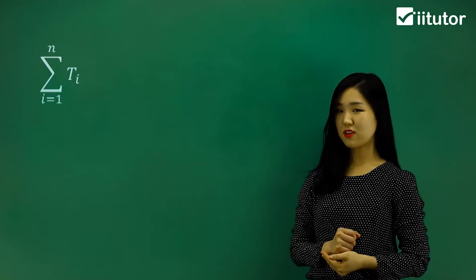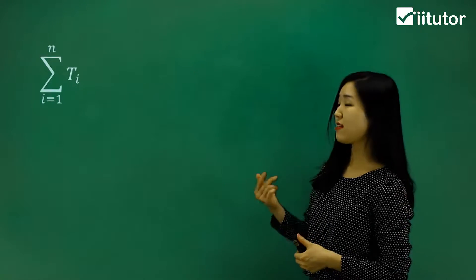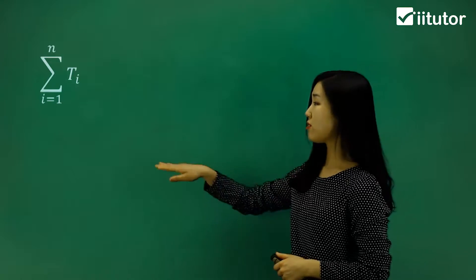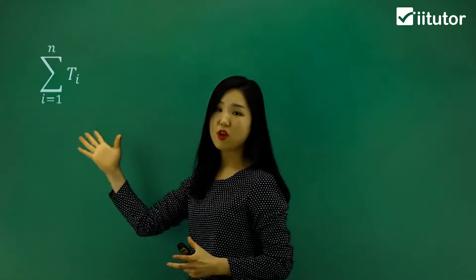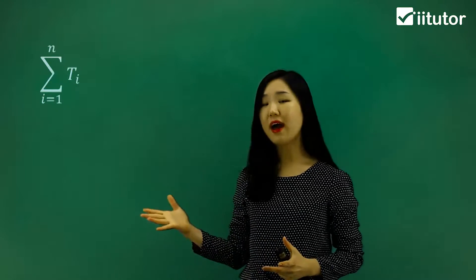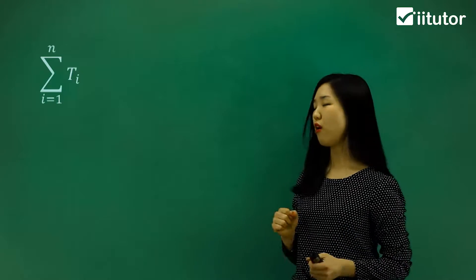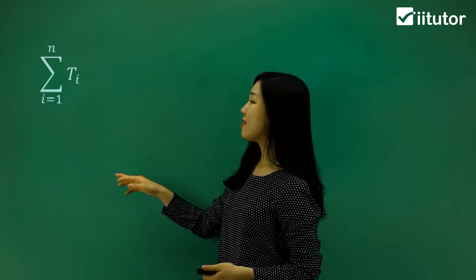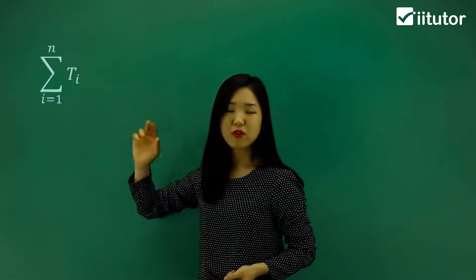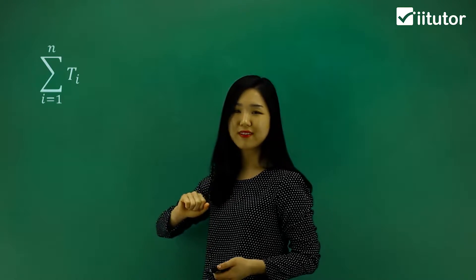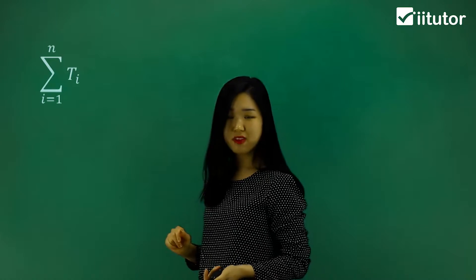Let's look at some sigma notation. The sigma notation is something that's on the board. This symbol is our sigma notation and it implies summation — the sum of however many terms. There's always an expression or a formula on the side of the sigma notation.